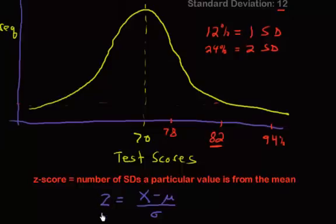So here's our formula down here. z is going to equal, now what's x? x is our particular value. So I'm just going to label that. x is our particular value. It's like 82 or 94 or 78. And you're going to subtract μ, which is the mean, and then you're going to divide by σ, the standard deviation.